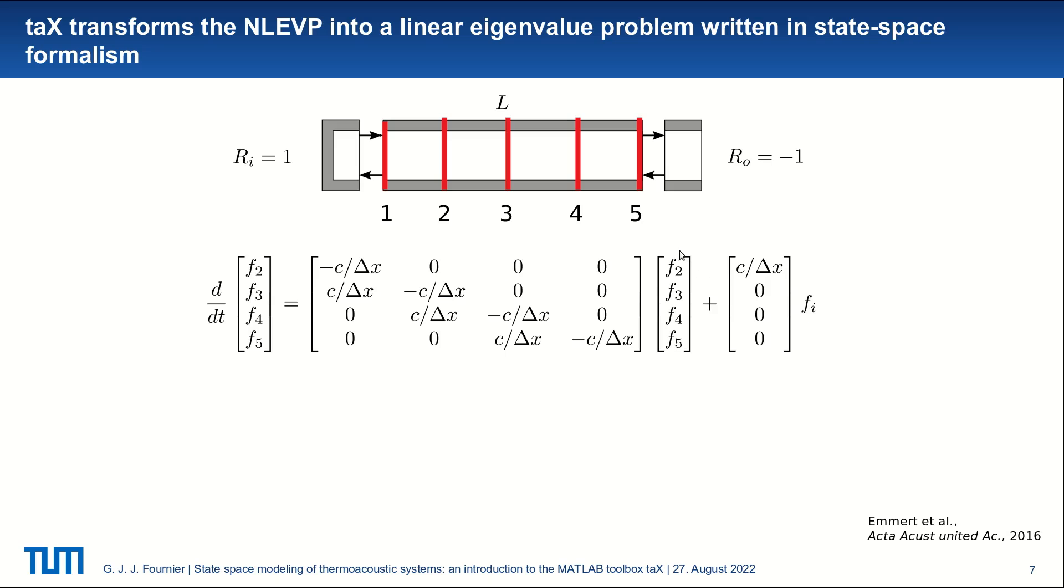Now, we can also write an equation for the f outlet. And f outlet is simply f5. So if we call this vector x, we can say that f outlet is simply f5. So 0, 0, 0, 1 times the x vector plus 0 times the inlet. And you could argue that it is a bit peculiar writing it like that. It's just to make appear naturally the state-space representation.